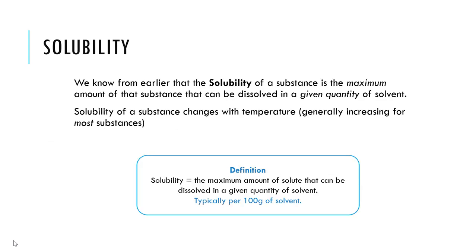The first thing we need to do is define solubility. Solubility is the maximum amount of substance that can be dissolved in a given quantity of solvent while still remaining homogeneous — completely dissolved into the solvent, producing a solution.